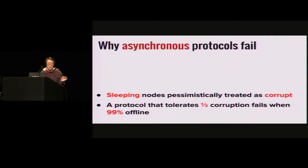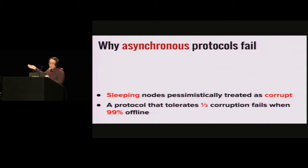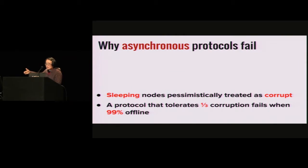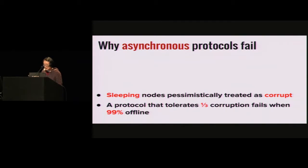Perhaps it's a more interesting question to ask why even the asynchronous protocols don't work. In the classical asynchronous model, if a node goes to sleep, we pessimistically treat it as being corrupt. Imagine an asynchronous protocol that can tolerate up to one-third corruption. If only 1% of people showed up, the protocol treats 99% of the nodes as corrupt. The nodes wait to collect votes from two-thirds of the people, but since only 1% showed up, you never collect enough votes, and therefore the protocol gets stuck.